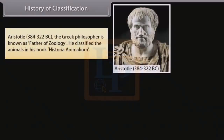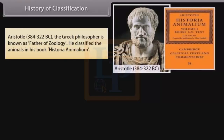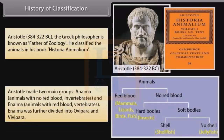History of classification: Aristotle (384–322 BC), the Greek philosopher known as the father of zoology, classified animals in his book Historia Animalium. He made two main groups: Anima — animals with no red blood (invertebrates), and Anima — animals with red blood (vertebrates).